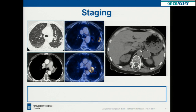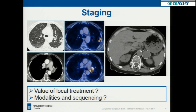These are more detailed images of this particular patient. You can see the primary tumor with some cavitation, the lymph nodes, and here the adrenal gland — quite large in this patient. So what is the value of local treatment in this stage 4 disease? And if we go for a multimodality approach, how do we combine the different modalities in the best way?